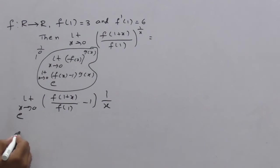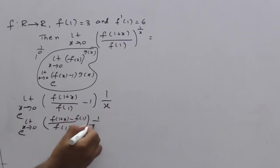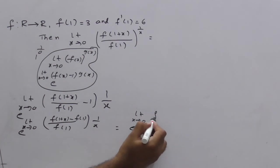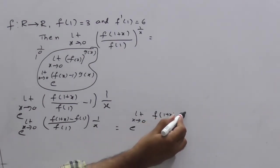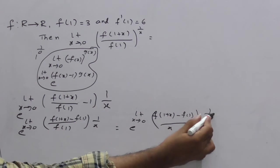Now, it is clearly e power limit x tends to 0. So, LCM, this is f(1). Here it is f(1+x) minus f(1) into 1 by x. Clear? Now, you can write like this for your convenience and to get a better idea, this can be written as e power limit x tends to 0, f(1+x) minus f(1) by x into 1 by f(1). Right?